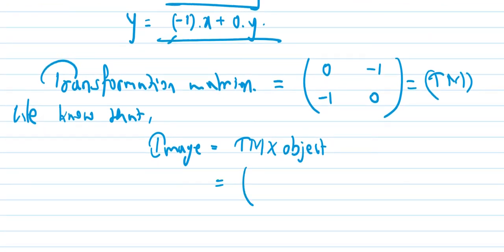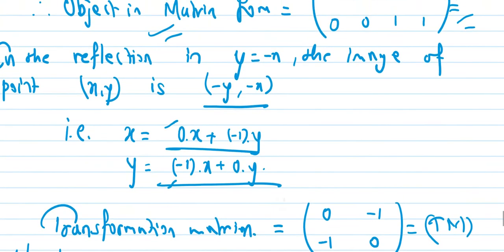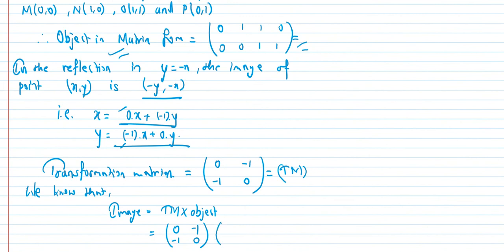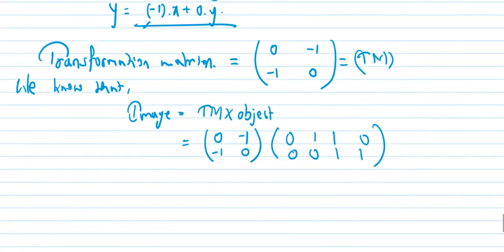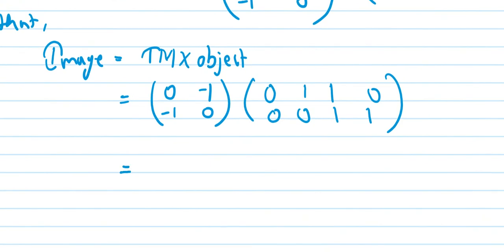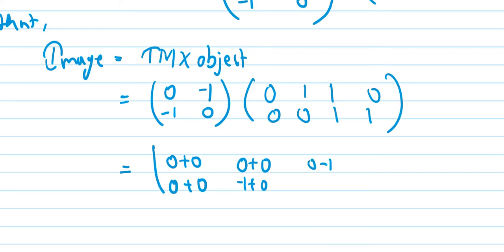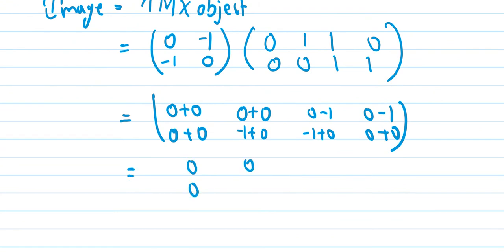The transformation matrix is 0, minus 1 / minus 1, 0. The object matrix is: 0,1,1,0 / 0,0,1,1. Multiplying these, we get the image matrix: 0,0,0,minus1 / minus1,minus1,minus1,0 — computing each element step by step.